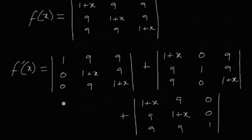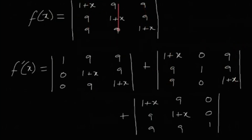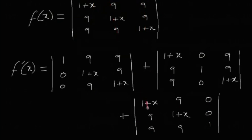Next, we form a second determinant where only the second column is differentiated, giving [0, 1, 0], while the first and third columns remain as in the original matrix. Finally, a third determinant is formed where only the third column is differentiated, giving [0, 0, 1], while the first and second columns remain the same. So f'(x) is the sum of these three determinants.